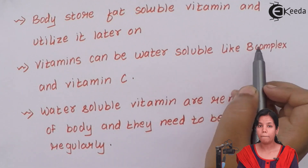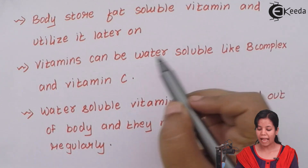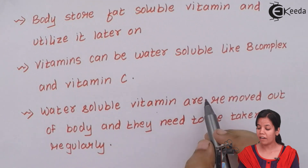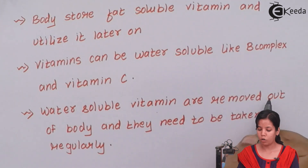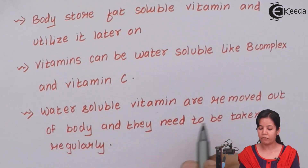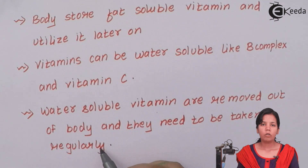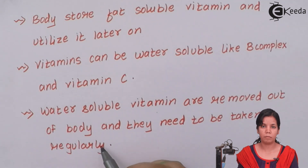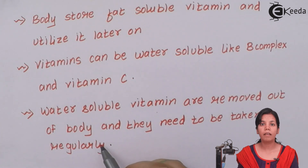Next are water-soluble vitamins like B complex and vitamin C. These water-soluble vitamins are removed out of the body, so you have to take them regularly. Vitamin C found in lemons, as well as vitamin B complex found in fruits and vegetables, are continuously removed from the body and must be replenished regularly.